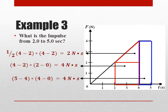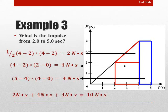And then the last part here, this rectangle is going to be base of 1 second and a height of 4 newtons, and multiply those together, you get 4 newton-seconds. Add them all together, you get the total area, which gives us 2 plus 4 plus 4, which is 10 newton-seconds.